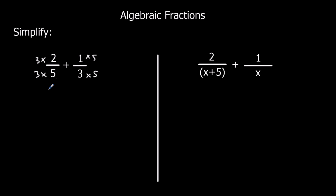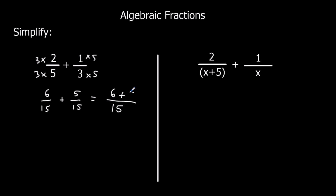So here we've got 6 over 15 plus 5 over 15, and then we can just add them up. We can make them one fraction: 6 plus 5, so we've got 11 over 15.